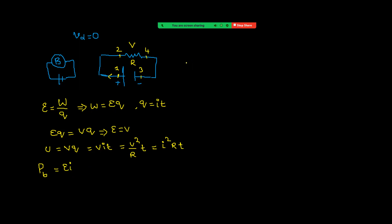Suppose the battery has some resistance — this is shown separately but remember it is the internal resistance of the battery, not an external resistance. Due to this internal resistance, some energy is lost inside the battery — this is why batteries in phones and TV remotes get heated.